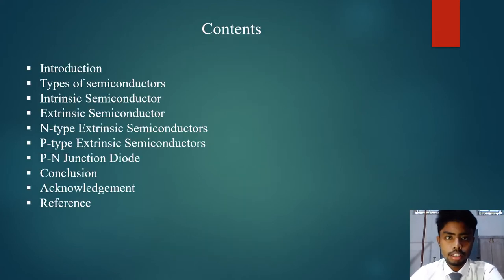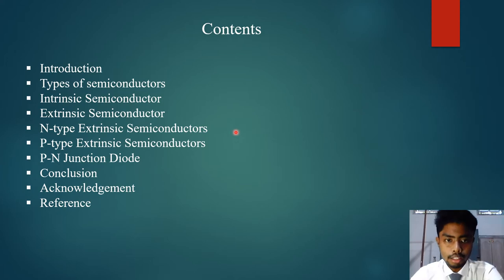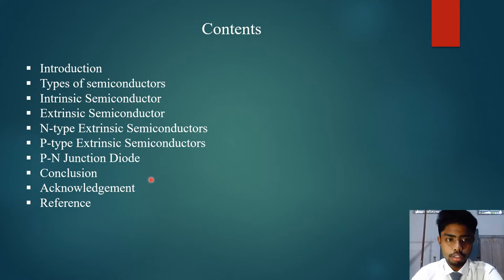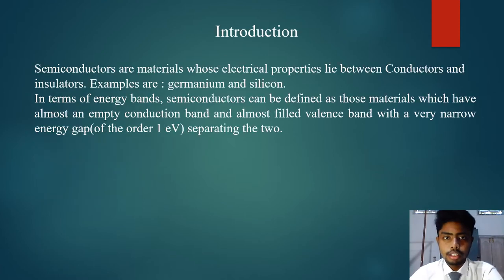These are the contents: first is introduction and types of semiconductors, intrinsic semiconductor, extrinsic semiconductor, N-type extrinsic semiconductors, P-type extrinsic semiconductors, P-N junction diode, conclusion, acknowledgement, and references. Now we turn to the next slide, which is the introduction.